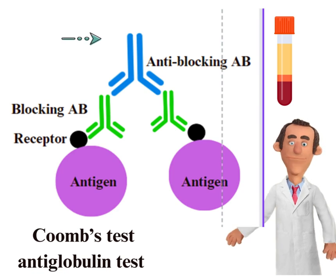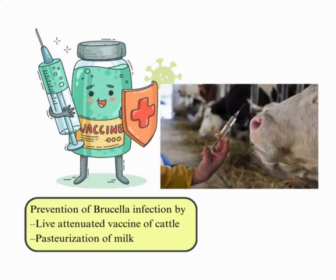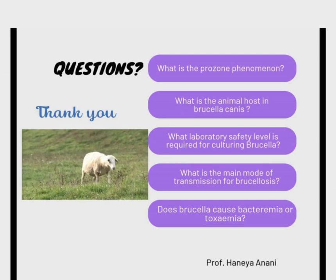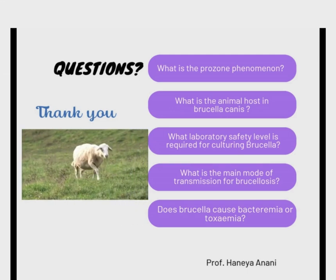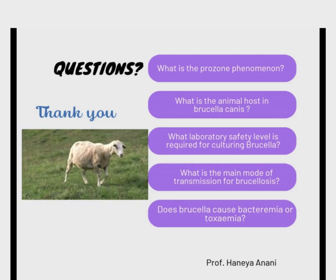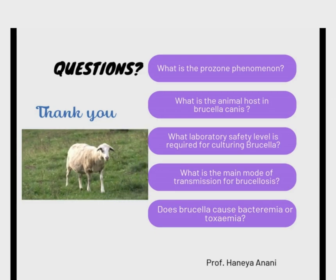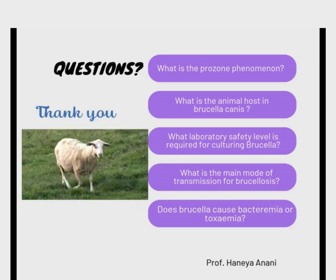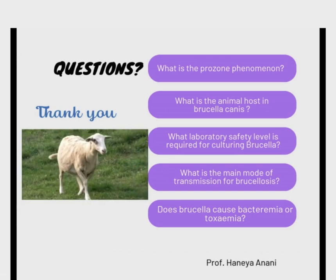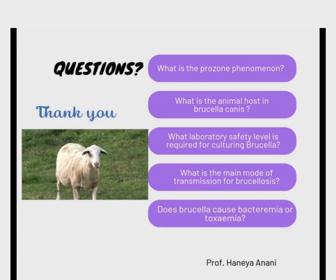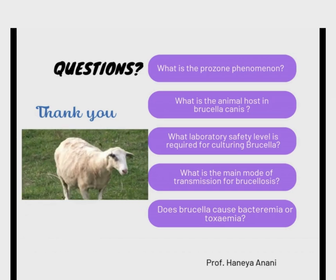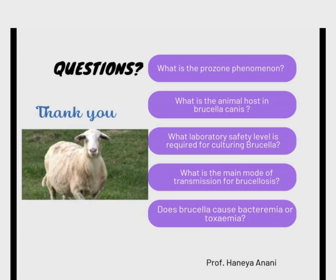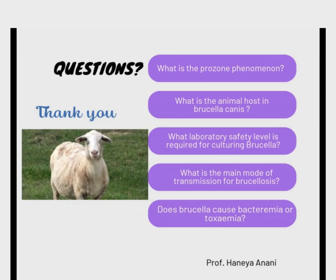A Coombs titer of 1:40 is considered positive. Brucellosis can be prevented by use of a live attenuated vaccine for cattle and pasteurization of milk. Review questions: What is the prozone phenomenon? What is the animal host for Brucella canis? What laboratory safety level is required for culturing brucella? What is the main mode of transmission for brucellosis? Does brucella cause bacteremia or toxemia? Thank you for watching — see you in the next video. Goodbye and best wishes.